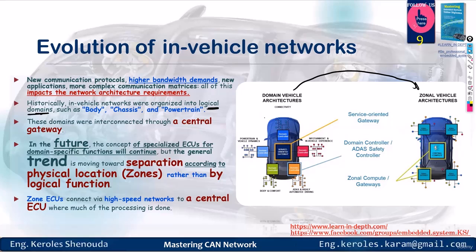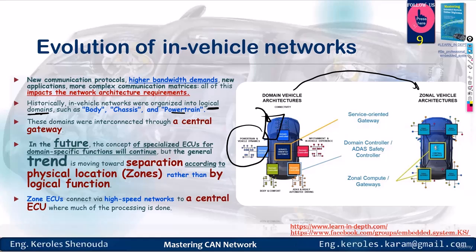The evolution of in-vehicle network technology has seen three stages. Before diving into those stages, it's essential to understand that the current time is often referred to as the domain vehicle architecture era. This will, in the foreseeable future, transition towards the zonal vehicle architecture. Domain vehicle architecture is how a vehicle organizes its electronic control units based on logical domains. A logical domain isn't something physical — powertrain, for instance, is a logical domain representing a category under which various functions like braking, transmission, or engine control fall.